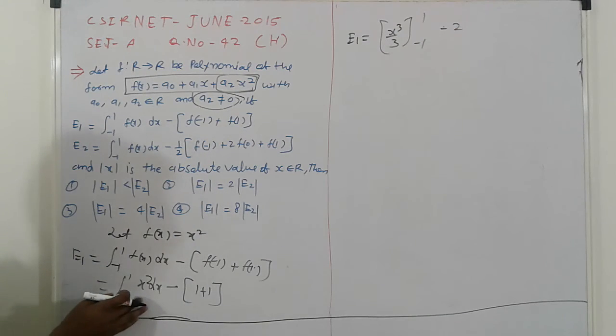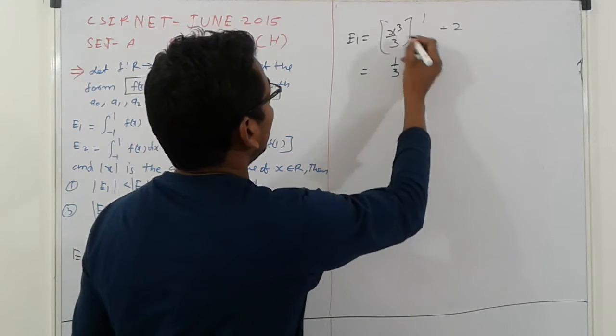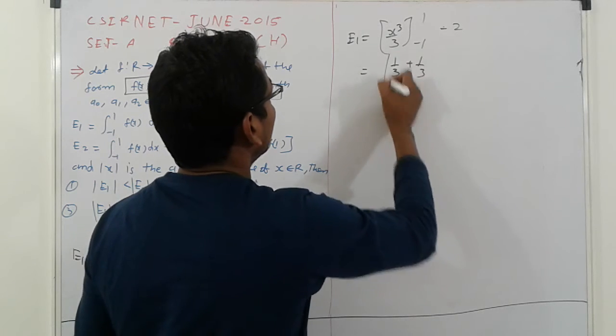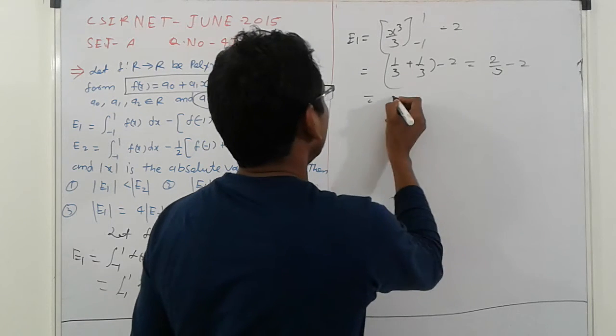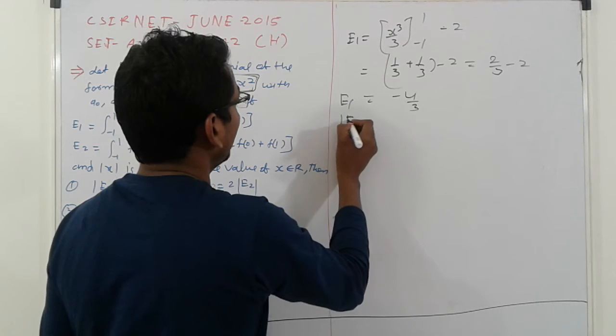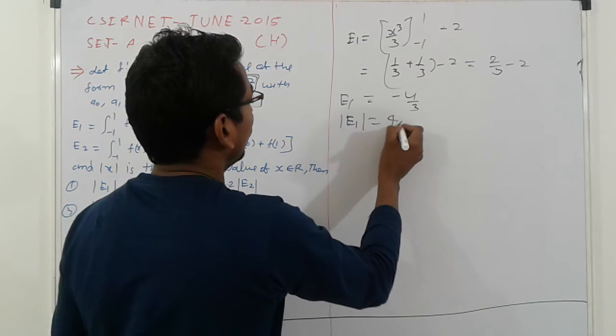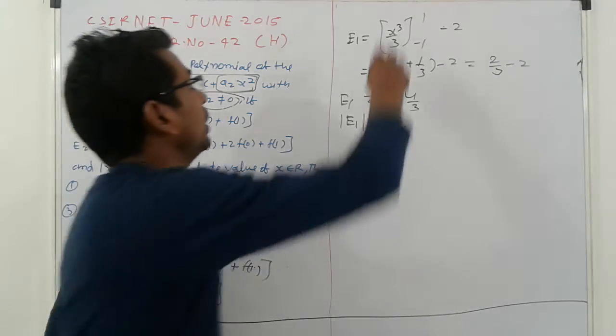Then calculate this: we get 1/3 minus (-1/3) minus 2. So simplification 2/3 minus 2, this is -4/3 for E1. So mod of E1 is 4/3.